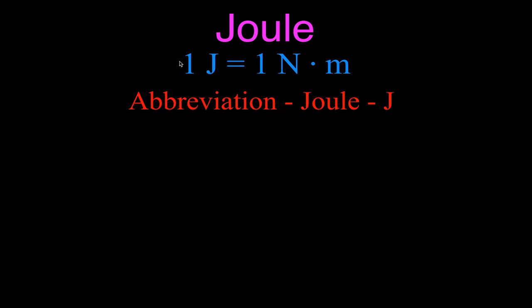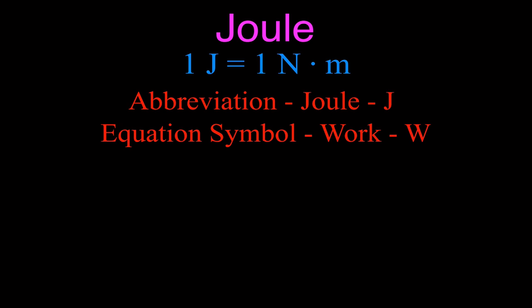A joule is what we'd call a newton-meter. If you apply a force of one newton through a distance of one meter, you do one joule of work. The abbreviation for the joule is the capital J, and it is the metric unit for work and energy. The equation symbol for work is W. So we can say that we do 120 joules of work on an object. Work is calculated as force times distance — a newton-meter.